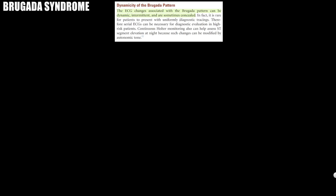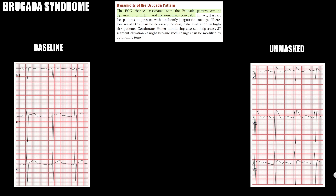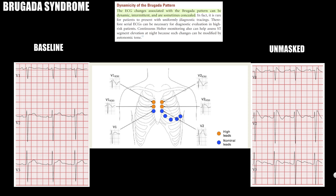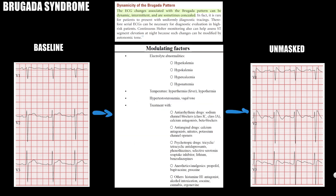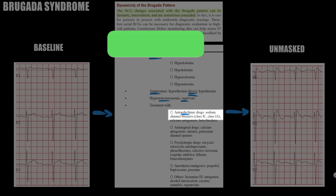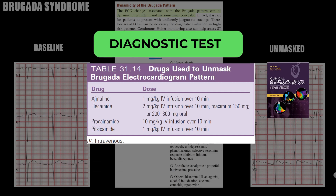ECG changes associated with the Brugada pattern can be dynamic, intermittent, and sometimes concealed. When Brugada syndrome is suspected, placing right precordial leads in a more cranial position — in the third and second intercostal spaces — increases sensitivity in some patients. There are also modulating factors that can unmask or exacerbate the typical Brugada ECG pattern: electrolyte abnormalities, temperature changes (especially fever), hypertestosteronemia, increased vagal tone, and treatment with antiarrhythmic drugs, sodium channel blockers class 1C/1A, calcium antagonists, or beta-blockers. Notably, sodium channel blockers are used as a diagnostic test to unmask the type 1 Brugada ECG pattern.